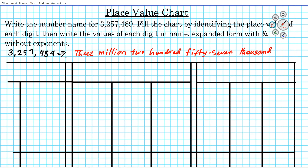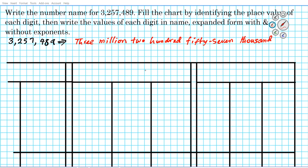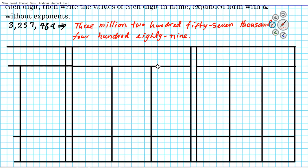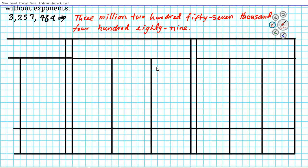And then in the ones place we have 489. So if you wanted to say this number in its name form, you just say 3 million, 257,489. So now let's go ahead and fill out this place value chart using the digits of this number.